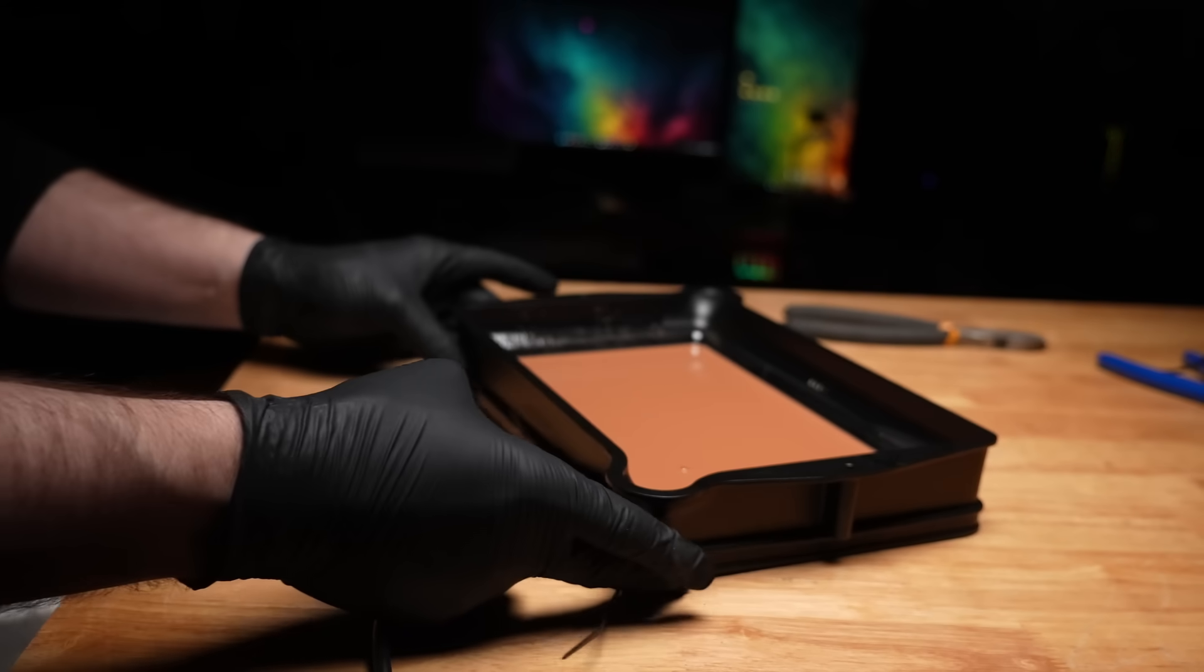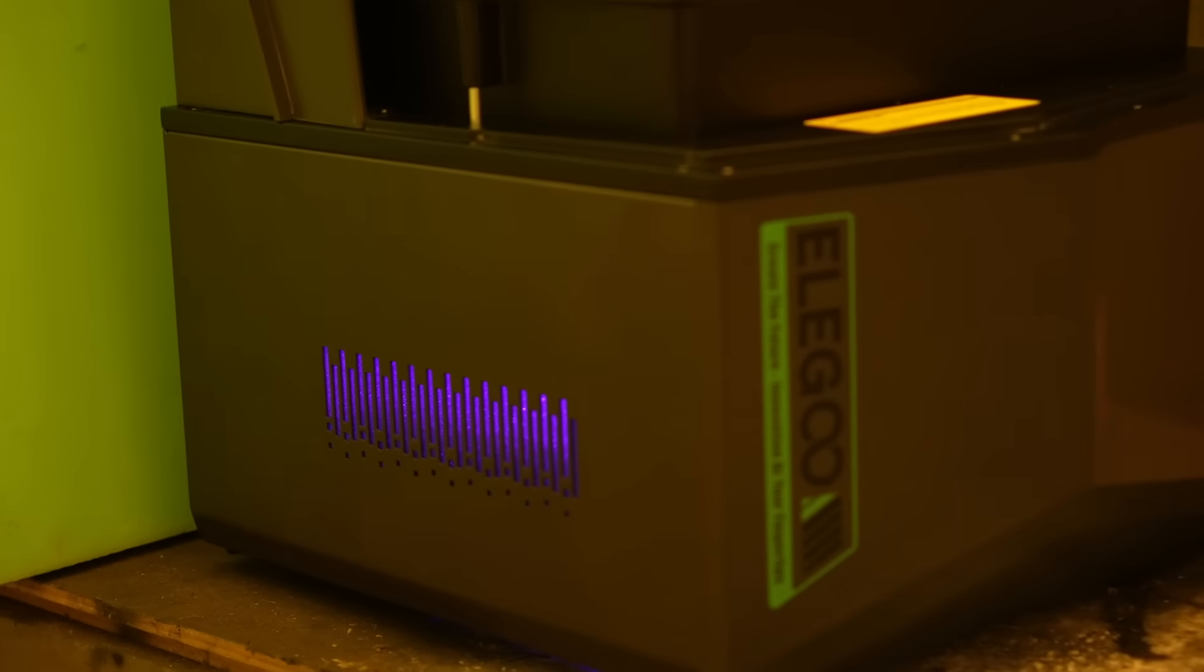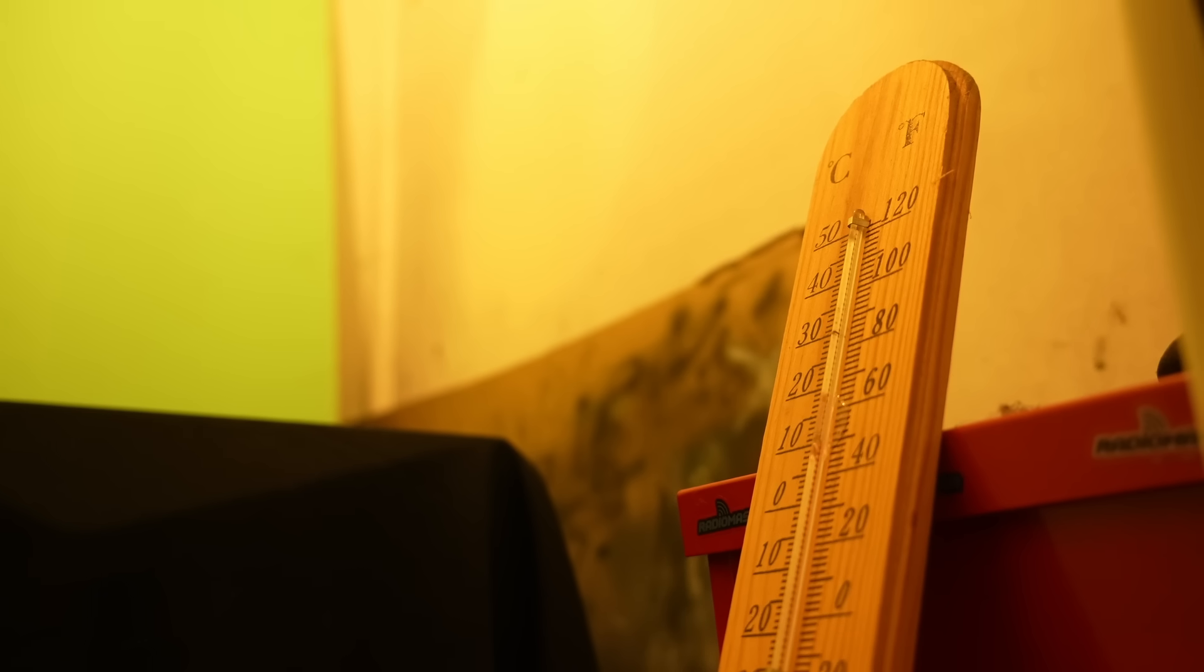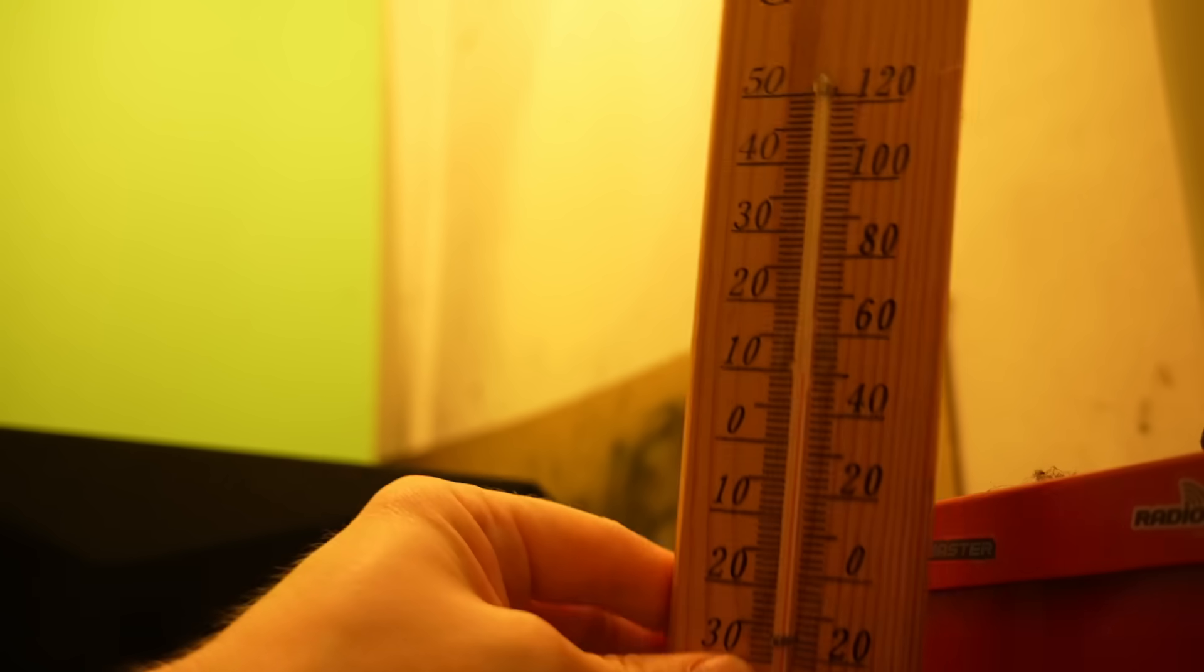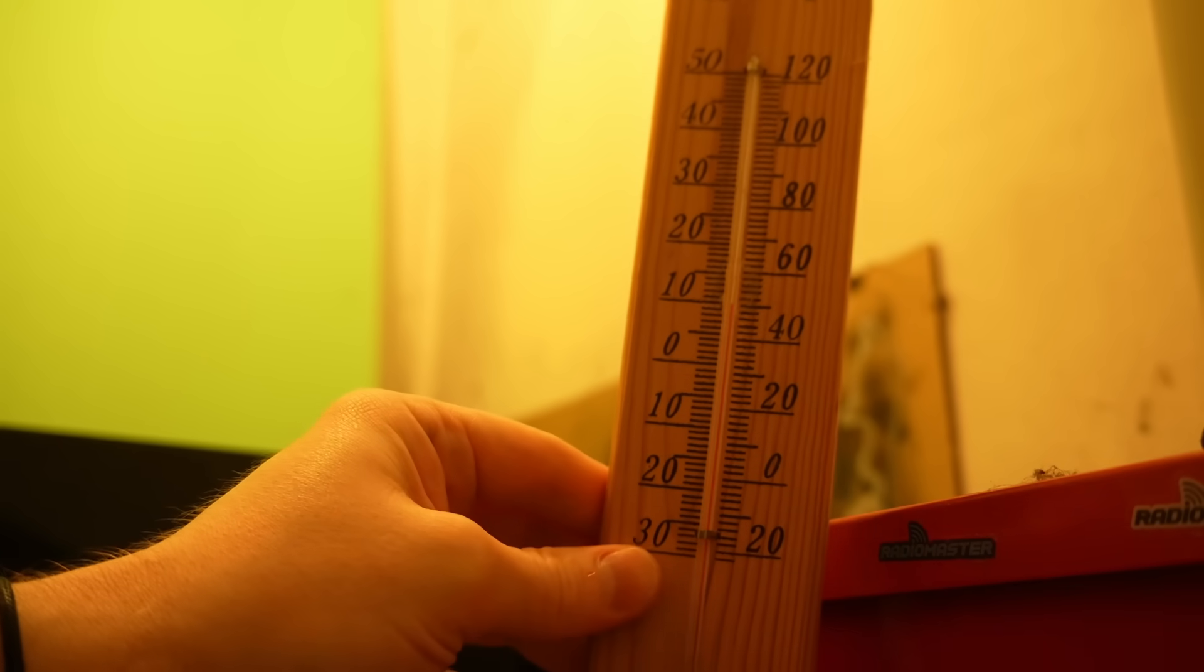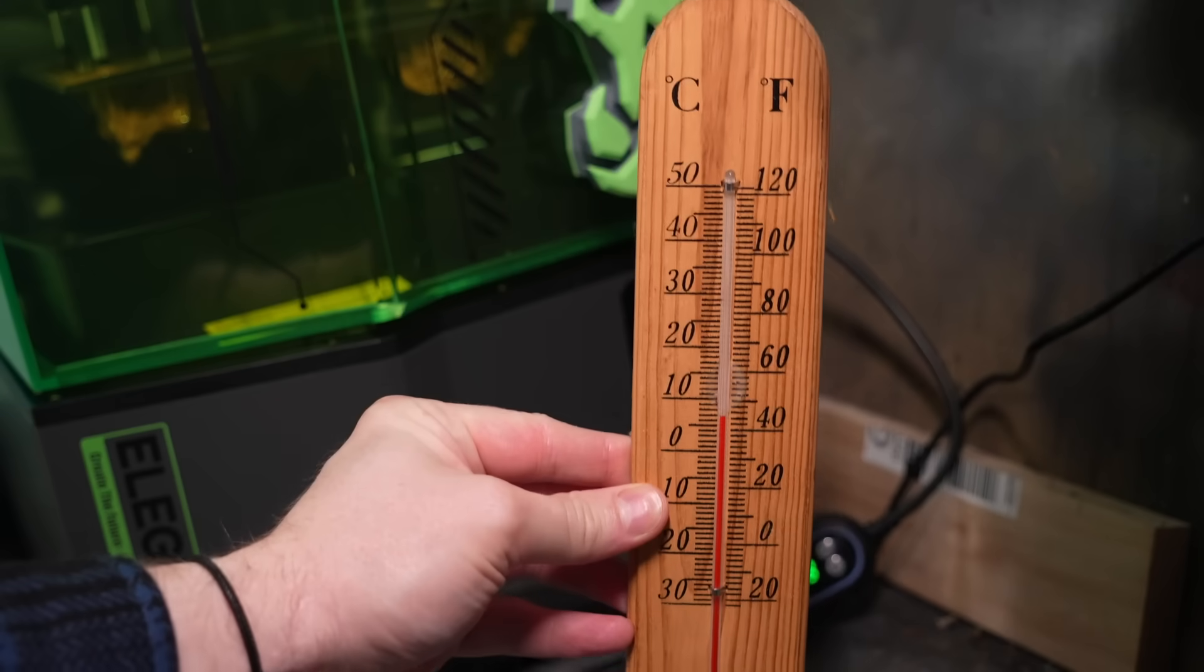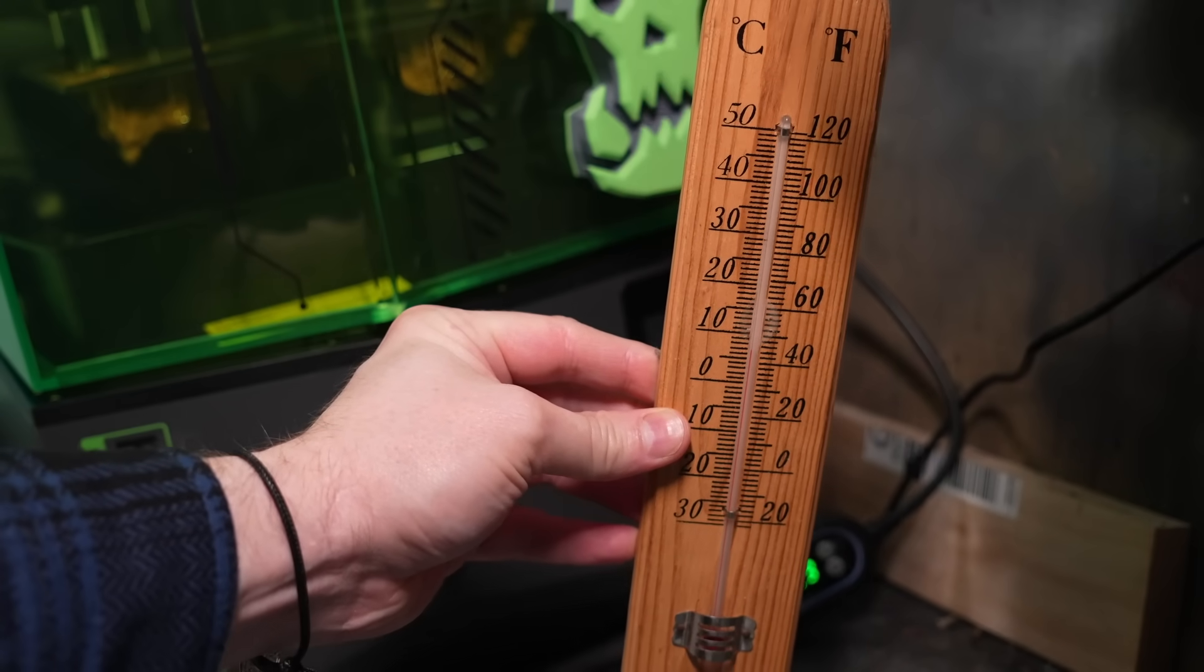Actually before we run off and print something with this I first need to run a control print here with no heating at all. We're currently smack bang in the middle of winter right now in Australia with the temperature outdoors overnight getting below 10 degrees C or 50 degrees Fahrenheit which I think should definitely be cold enough to cause us some issues here.